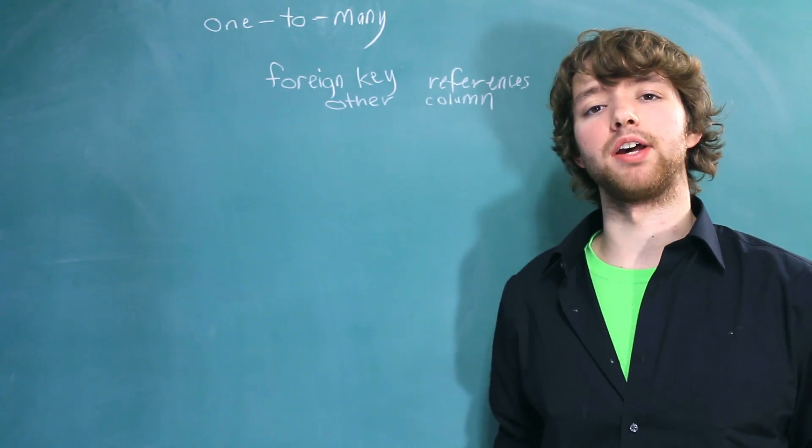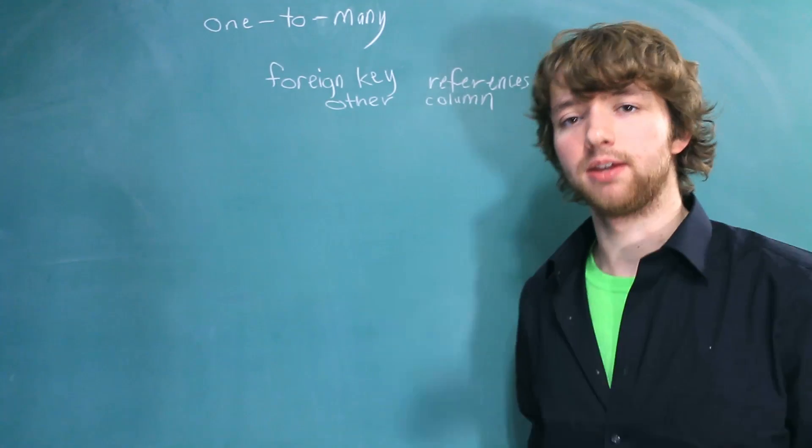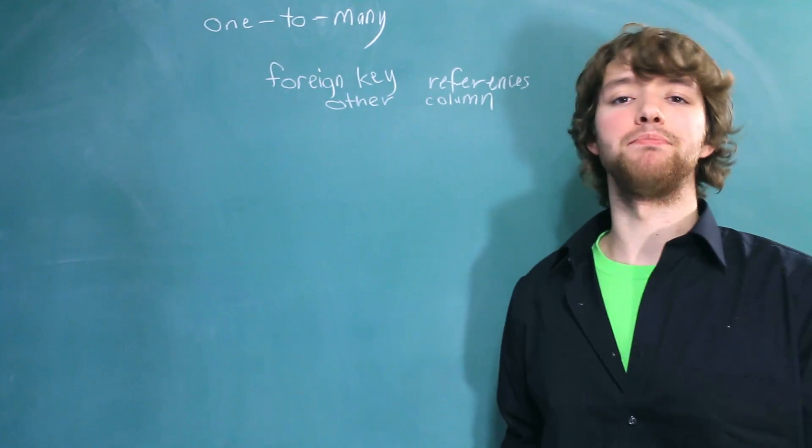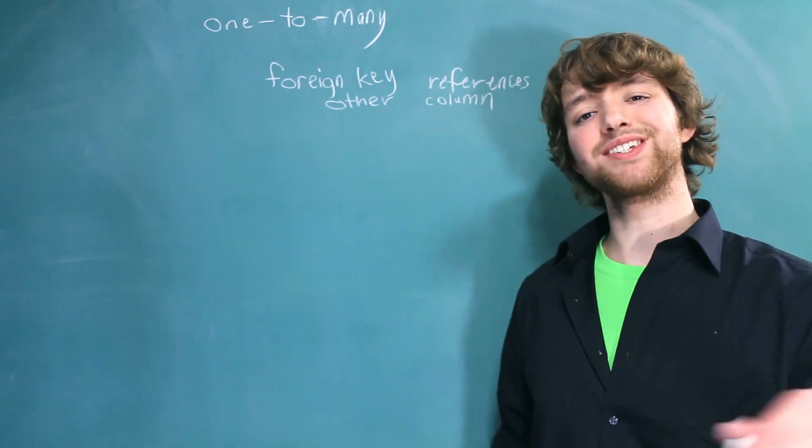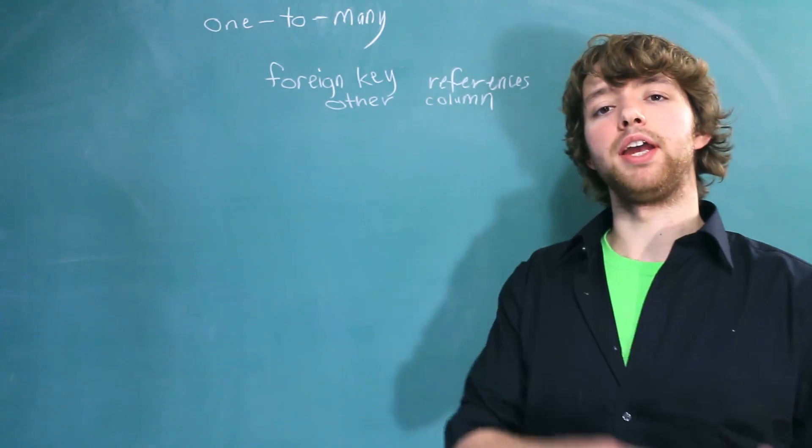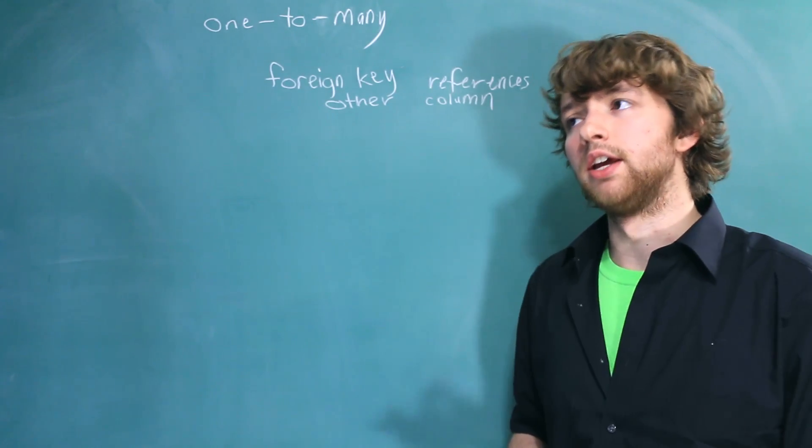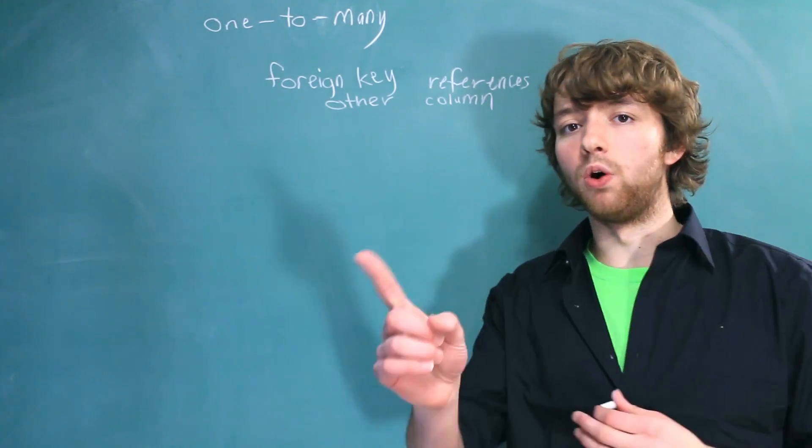Let's say we have a bidding website, like eBay - I didn't say it - where you can post stuff on there and people can bid on it to buy it. Now, the business rules of this application are that a user can create an account and they can create as many listings as they want, but one listing is owned by only one user.